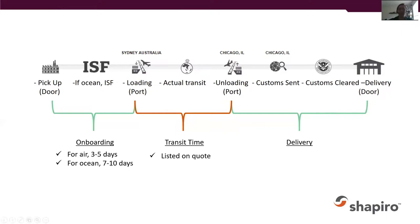Next is the transit time, which is what's listed on your quote. For air, there are slow, medium, and fast transit times. Fast is usually the most expensive and has the quickest transit — about a day. Slow means it's going to take stopovers, which is more cost-effective but takes longer. Air tends to be more expensive than ocean anyway, so you want to make sure you're looking at the best time frame for the cost.